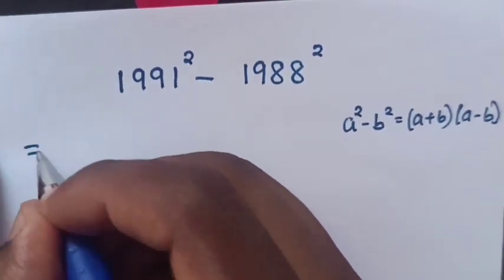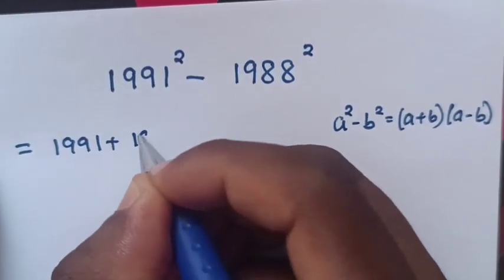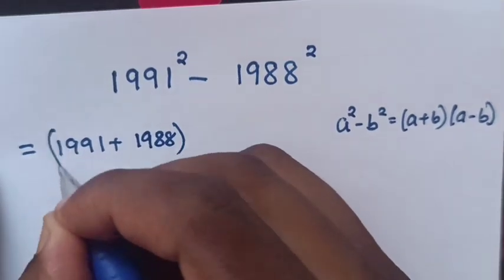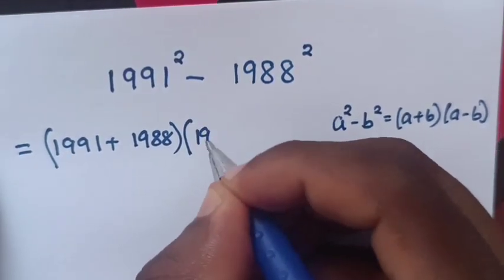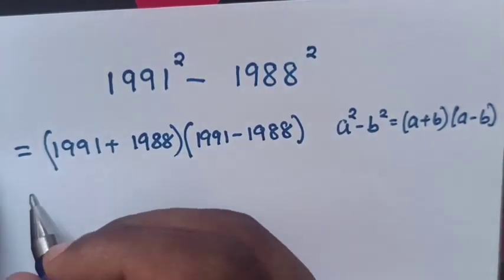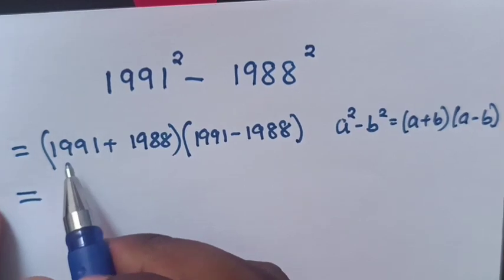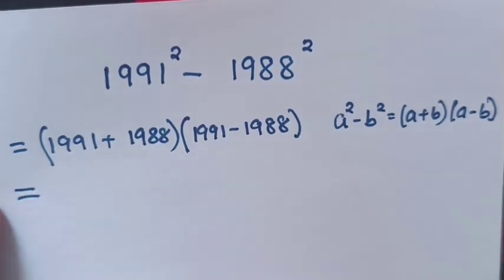Our expression will be equals to (1991 + 1988) times (1991 - 1988). Now, when you add here, simple way to add is...